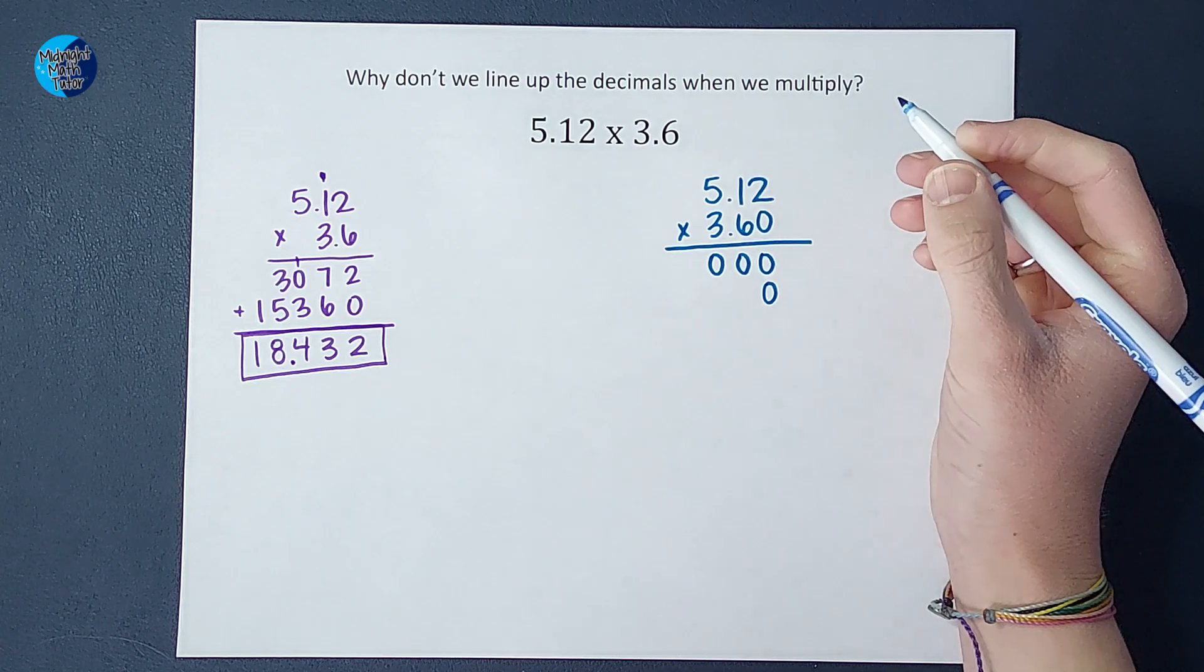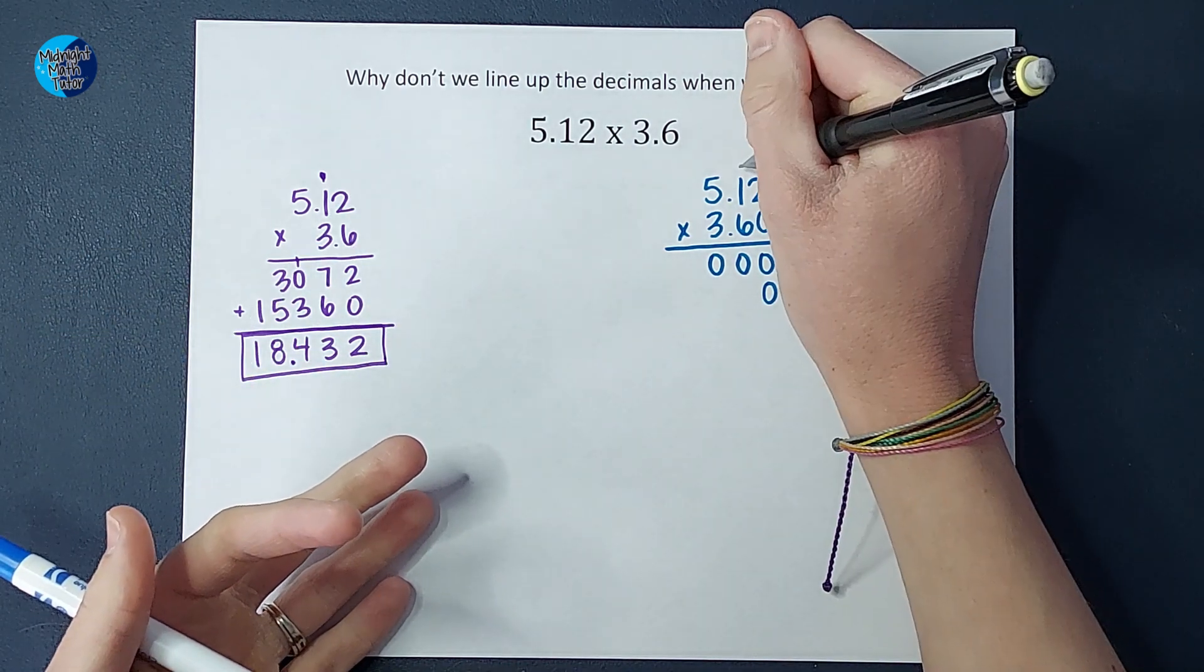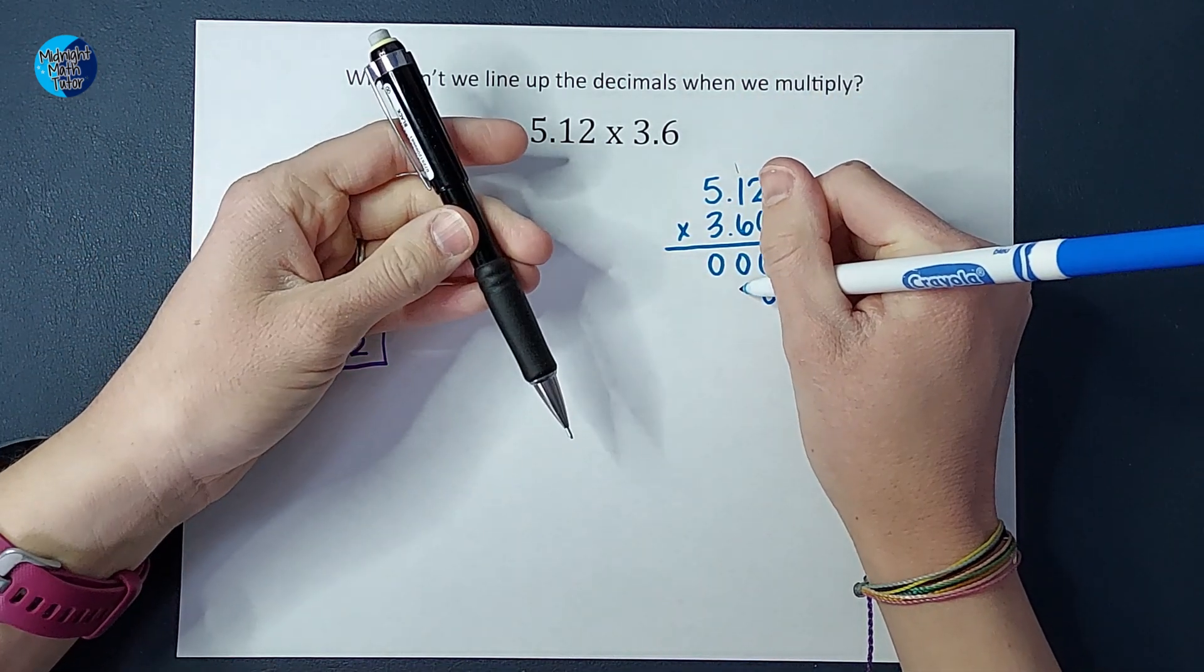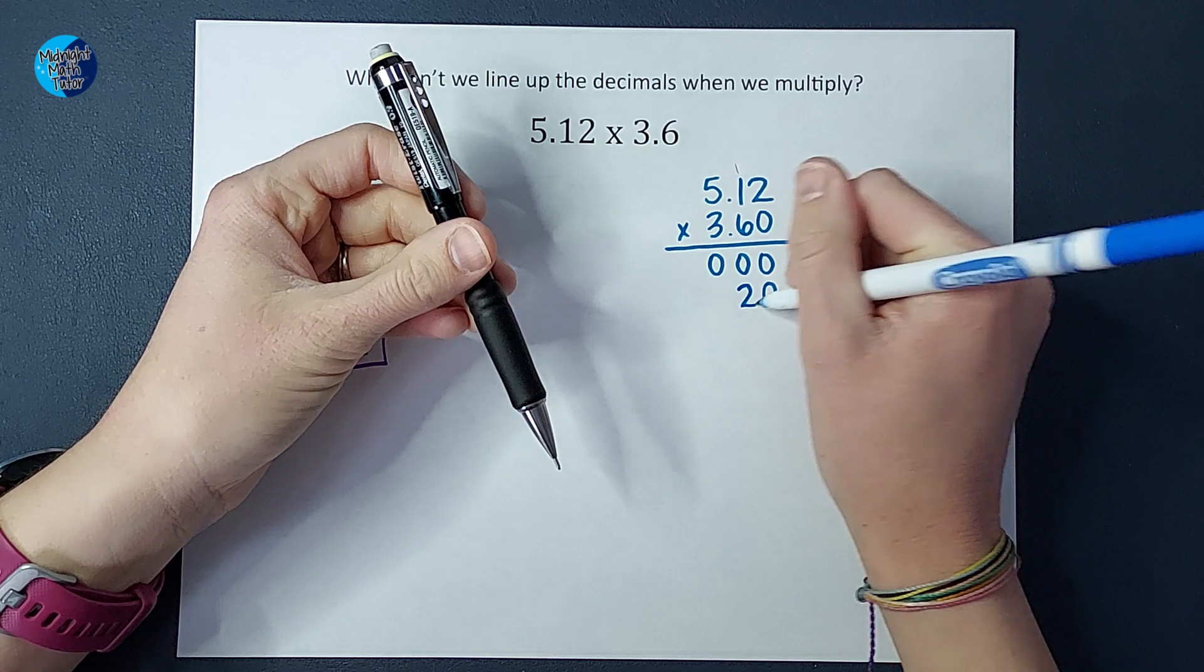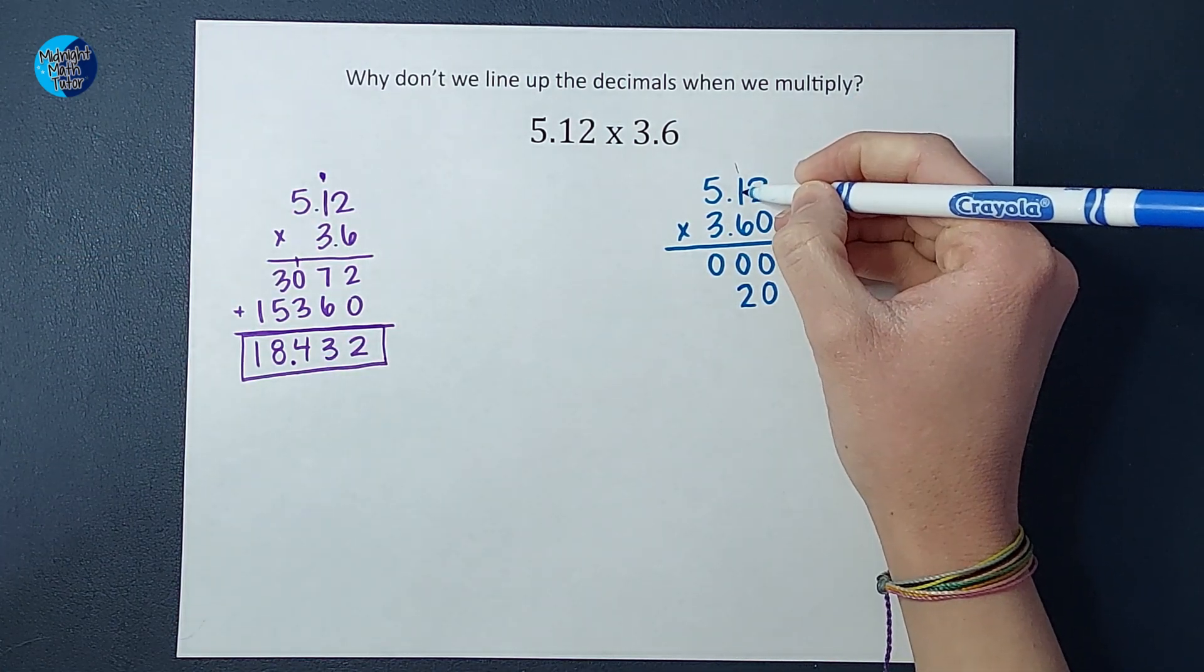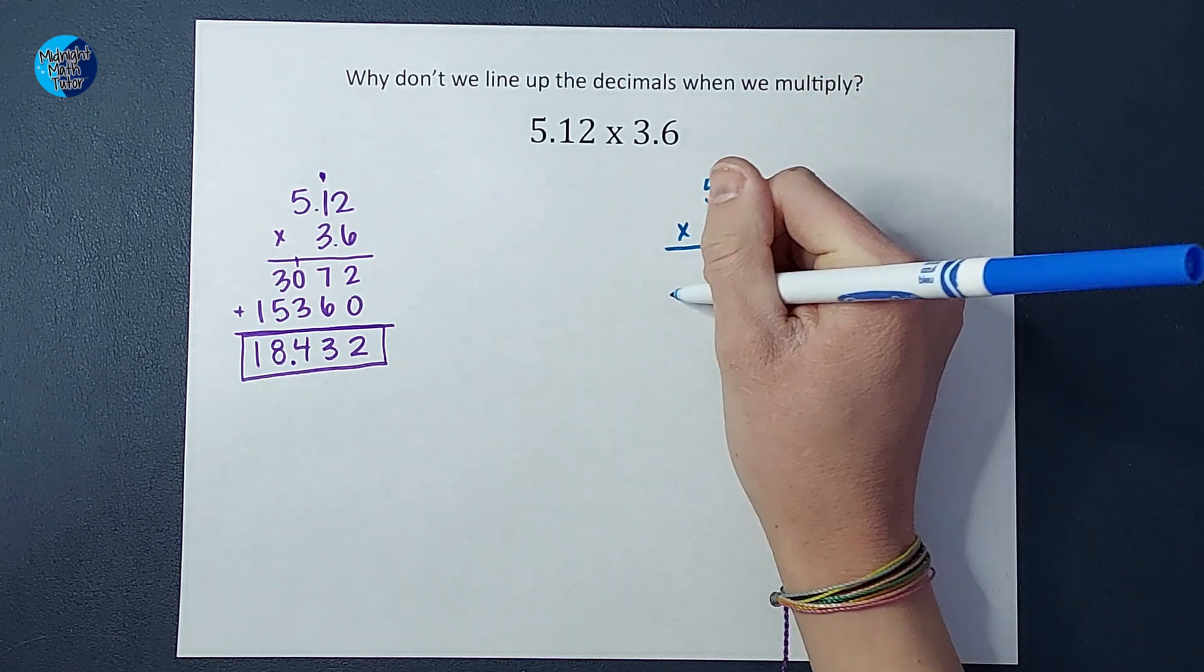Six times two gives me 12. And you're going to see me using a pencil for my carrying so that I can erase it, which by the way, this is the best mechanical pencil in the world. I'll have a link to it in the description. Is 12. Six times one gives me six plus one is seven.